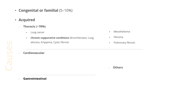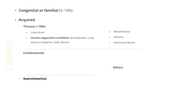Diseases of the thoracic system leading to clubbing include carcinoma of the lung, chronic suppurative pulmonary conditions like bronchiectasis, lung abscess, empyema, or cystic fibrosis. Mesothelioma, fibroma, and pulmonary fibrosis can also lead to clubbing.